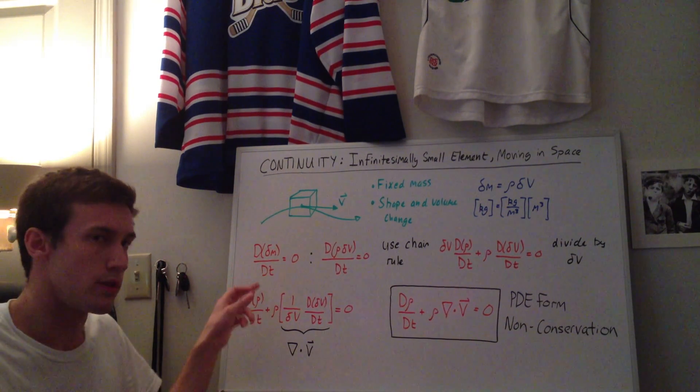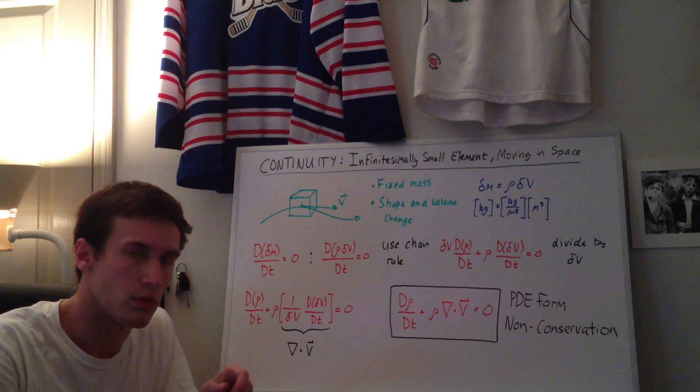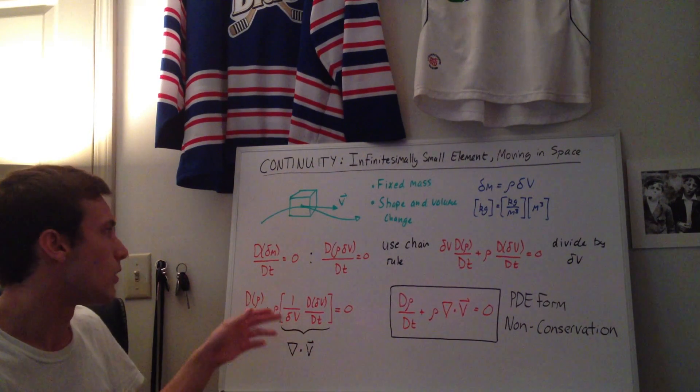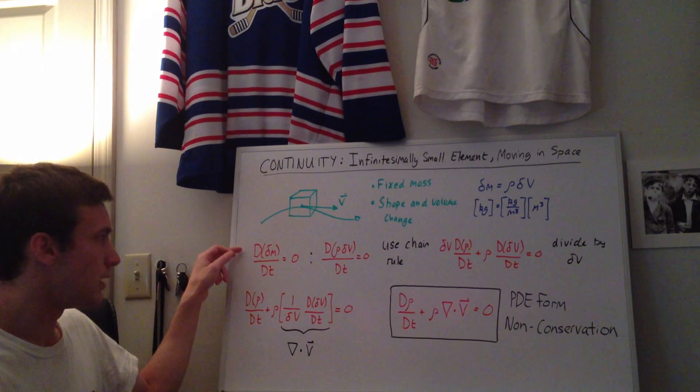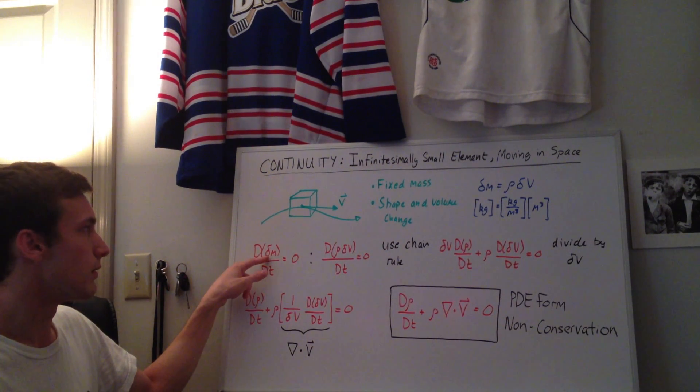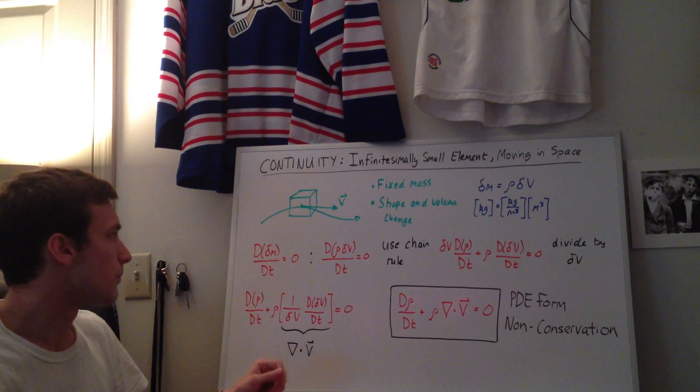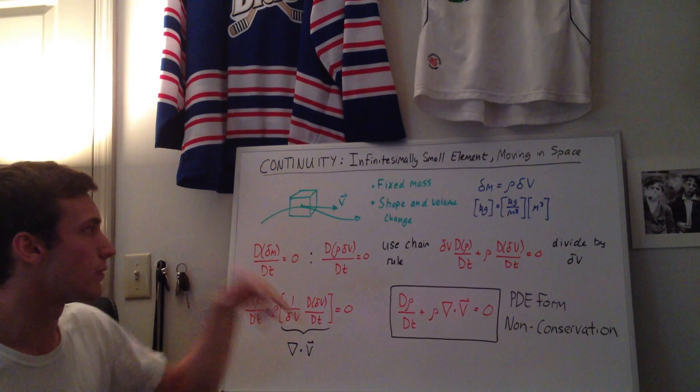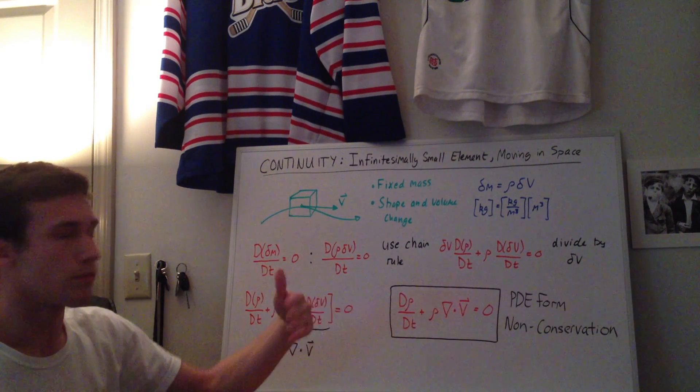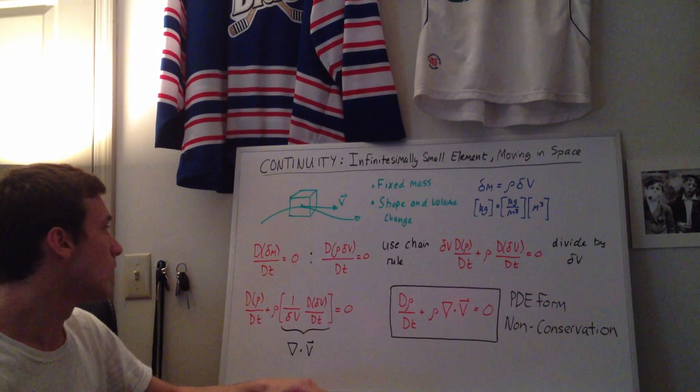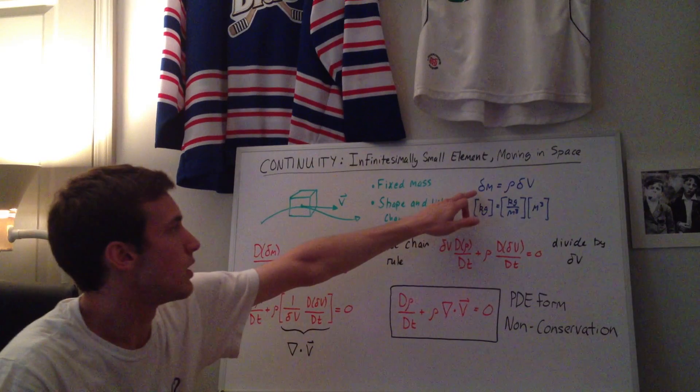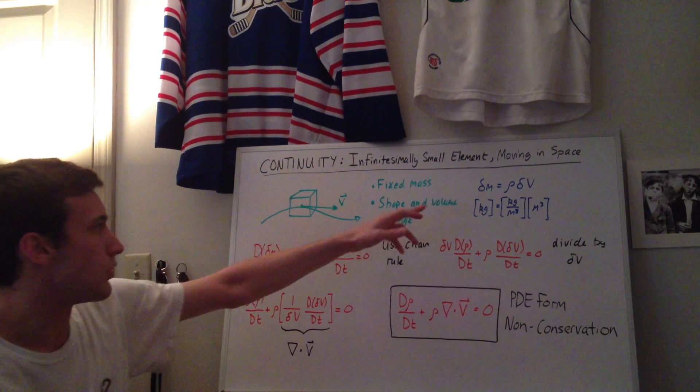So from my other video where I go through the substantial derivative or the total derivative, that's the definition of the total derivative. So we can write it as this capital D dt of the mass, and that's equal to zero. So the time rate of change of the mass of the fluid element as it's flowing along with the flow is going to be zero.